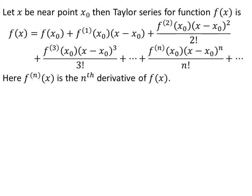Let x0 be any reference point near which we want to find the Taylor series of a function, and let x be any point near x0. The Taylor series for a function f of x is given as: value of f at x0, plus first derivative of f at x0 times (x minus x0), plus second derivative of f at x0 times (x minus x0) squared upon factorial of 2, plus third derivative of f at x0 times (x minus x0) cubed upon factorial of 3, plus so on up to infinity.